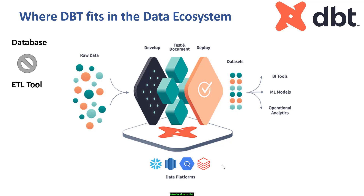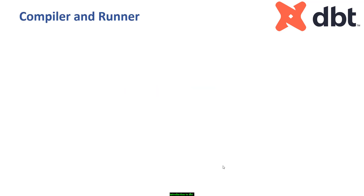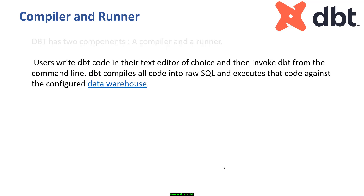Let's understand two very important features of dbt: the compiler and runner. dbt has two components — a compiler and a runner. Users write dbt code in their text editor of choice, similar to a software engineer writing Python or Java code, then invoke dbt from the command line. dbt has commands like dbt run, dbt test, and dbt compile. It compiles all code into raw SQL and executes that code against the configured data warehouse.